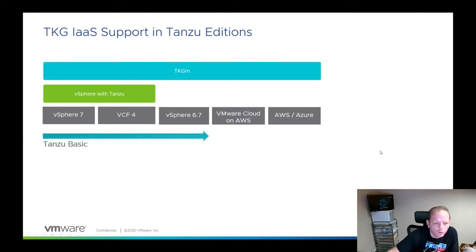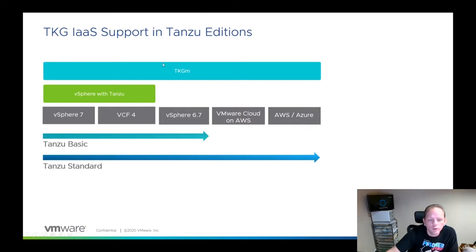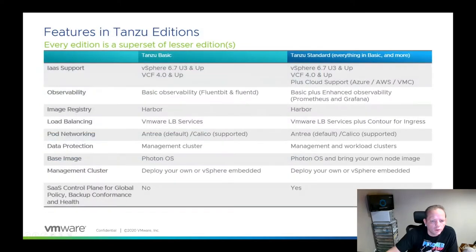Looking at our editions visually: Tanzu Basic on vSphere 7 gives you support for vSphere with Tanzu, while on 6.7 you can only use TKGm. The same applies for VMC on AWS, AWS, and Azure — you need Tanzu Standard to get support on those platforms.